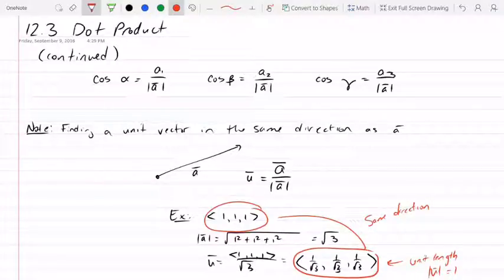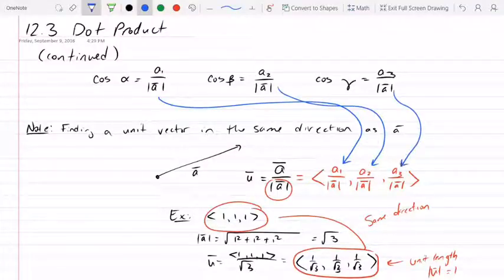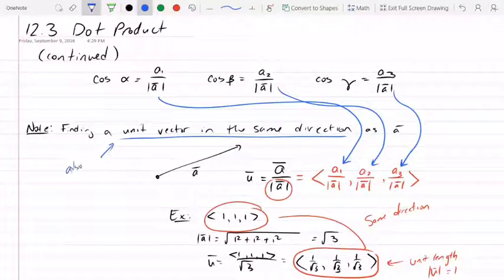But what's interesting now is that if you take this guy right here and write him out, multiply in 1 over the magnitude of a into each component, because dividing a vector by a constant scalar just means to divide each component by that, and here's what I wanted to show you: this guy right here, this guy right here, and this guy right here are all the direction cosines. So the elements of the unit vector in the same direction are also the direction cosines.